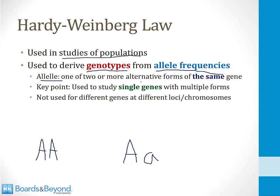An allele is one of two or more alternative forms of the same gene. A key point here is that this law is used to study single genes that have multiple forms, and an important distinction is that this law is not used for different genes found at different loci on chromosomes or on different chromosomes. Different rules apply in those scenarios — this only applies to single genes that exist in multiple different alleles.